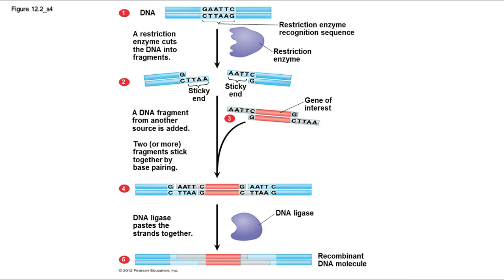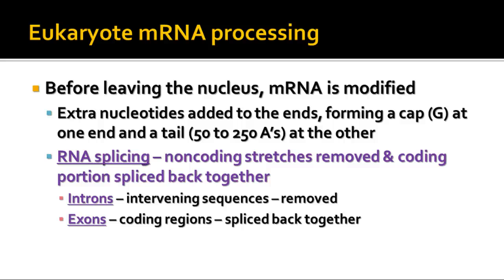This process is a bit different with eukaryote DNA because eukaryotic messenger RNA is processed before it leaves the nucleus. The messenger RNA is modified with extra nucleotides added on the ends — a cap, which is guanine, at one end, and a tail of 50 to 250 adenines in a row at the other end. Then the RNA is spliced: segments of non-coding DNA within eukaryotic sequences — called introns — are removed, and the coding portions — called exons — are spliced back together.